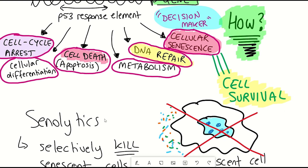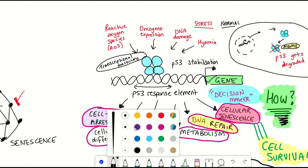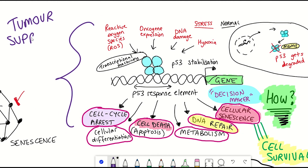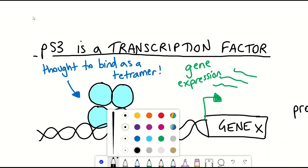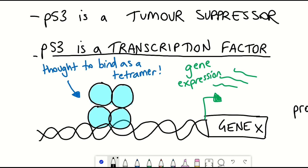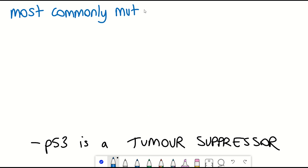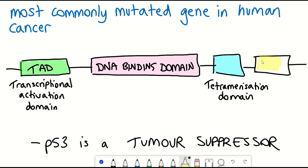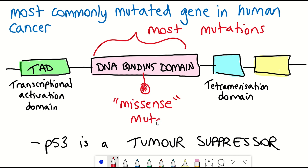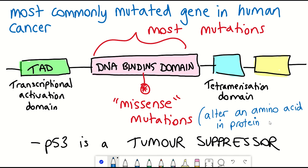Further understanding this decision process of p53 between apoptosis and cellular senescence could definitely aid the discovery of new senolytic approaches. Irrespective of whether apoptosis or cellular senescence is induced, both of these responses could be seen as tumour-suppressive mechanisms because they stop a damaged cell from further replicating and potentially causing tumourigenesis. For these reasons, p53 is often referred to as a tumour suppressor. Therefore it may not be surprising to hear that mutations in the gene encoding p53 are the most common event in human cancers.